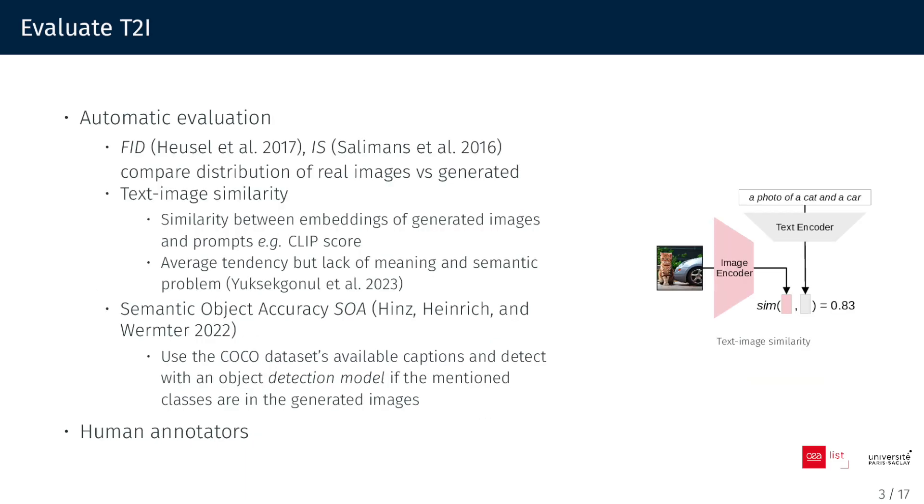Evaluating generative images is challenging. Some automatic metrics exist. The Fréchet Inception Distance and Inception Score assess if generated images resemble real ones. Text-image similarity computes distance between images and prompts with a CLIP model. However, it is only an average tendency, and it is difficult to interpret the score. There are also semantic problems, like you can switch words and obtain almost similar scores. This is not suitable if you want to measure precisely syntactic aspects.